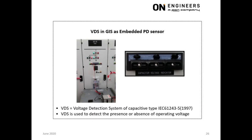This slide shows the use of VDS for online PD measurement. VDS stands for Voltage Detection System, as per IEC 61243. The VDS is a safety-related device to detect the presence or absence of voltage at the cable termination of a GIS. Because of its embedded nature at the cable termination, it is physically close to any PD defects there, and hence is a suitable PD sensor.